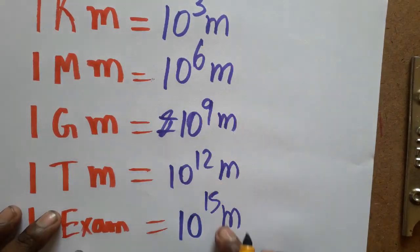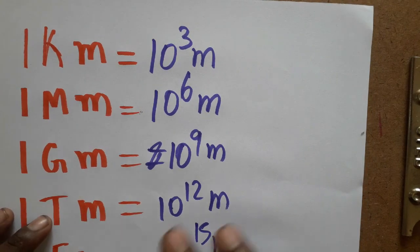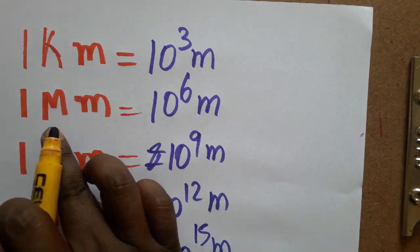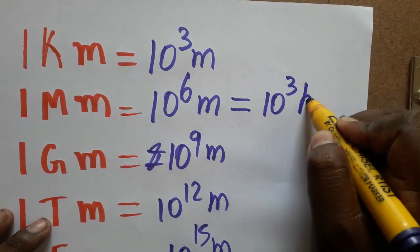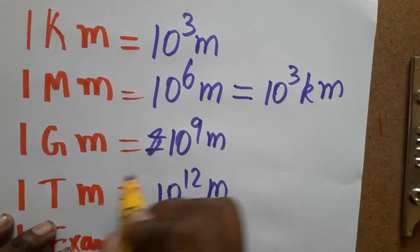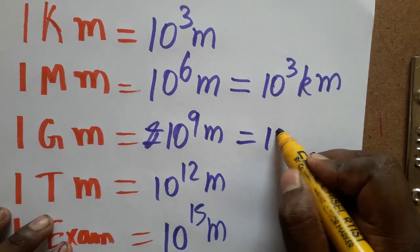Now we'll see: 1 megameter is equal to 10 power 3 kilometer. 1 gigameter is 10 power 3 megameter.